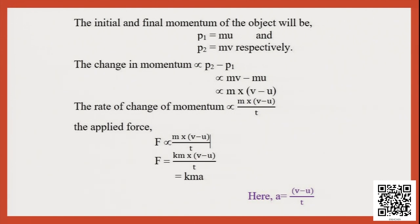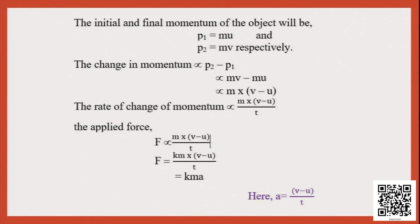Taking the value of k as unity, the force applied equals mass times acceleration: F = ma. This mathematical formulation tells us that the force applied on an object to change its velocity can be calculated as the product of mass and acceleration.